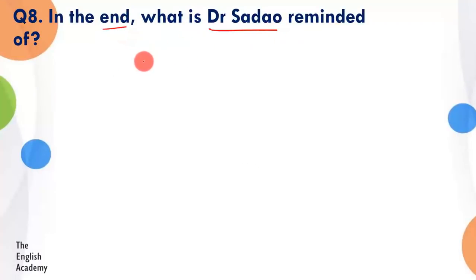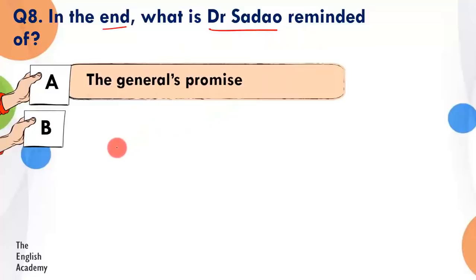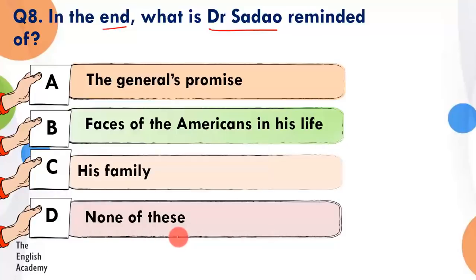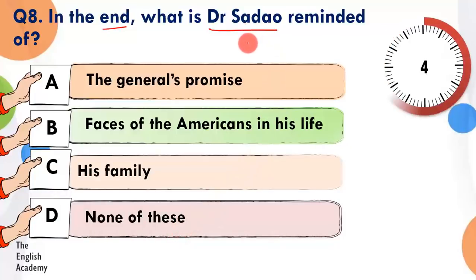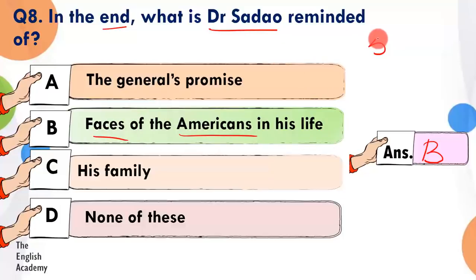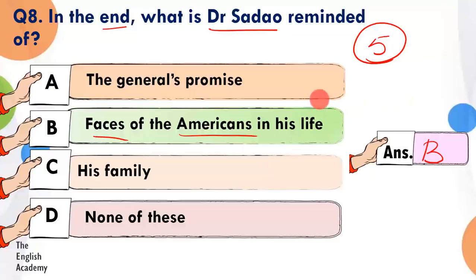Question number 8: In the end, what is Dr. Sadao reminded of? Option A: the general's promise. Option B: the faces of the Americans in his life. Option C: his family. Option D: none of these. The answer is Option B — the faces of the Americans in his life. Dr. Sadao ki life mein jo paanch important Americans the — unke professors, unki landlady — jab wo America mein rehte the, wo soldier — aise sab paanch logon ke chehre unke aankhon ke saamne aaye.